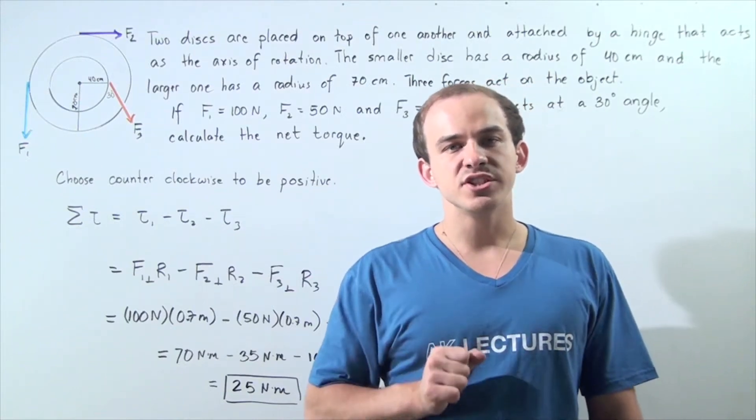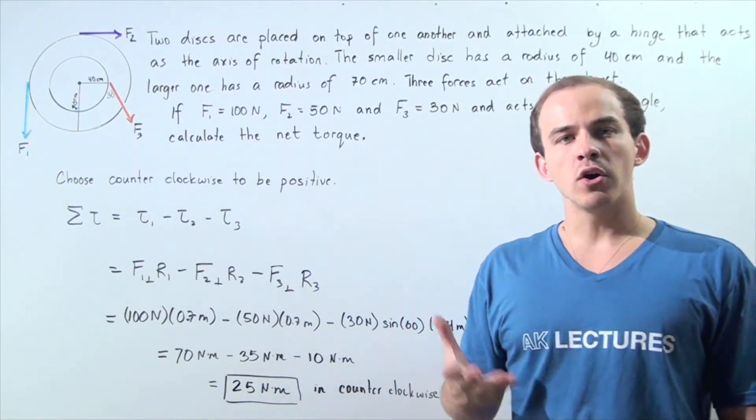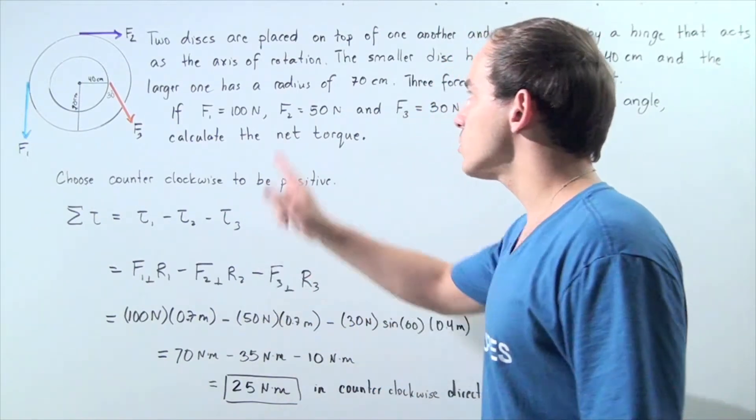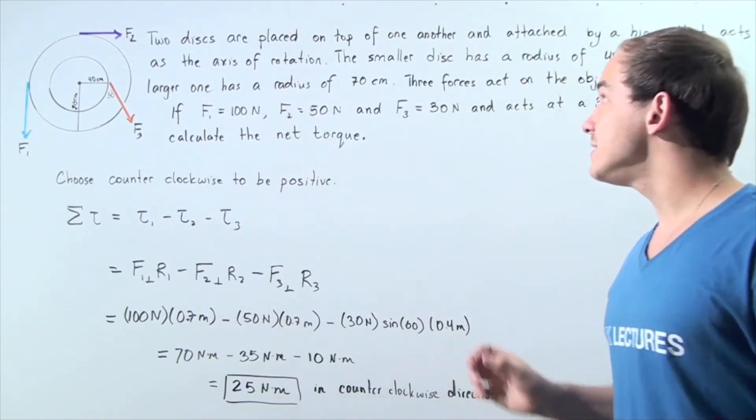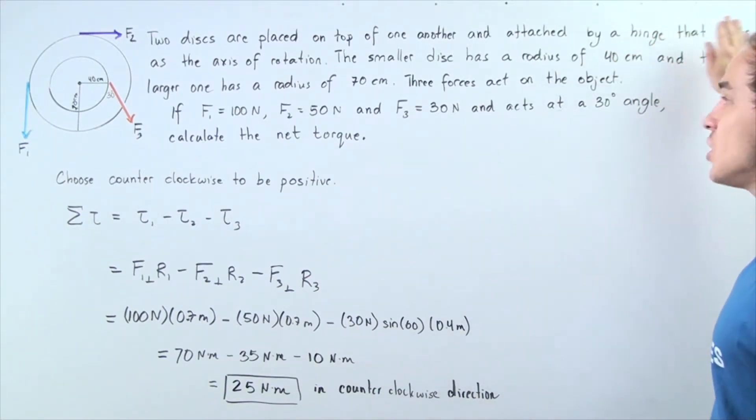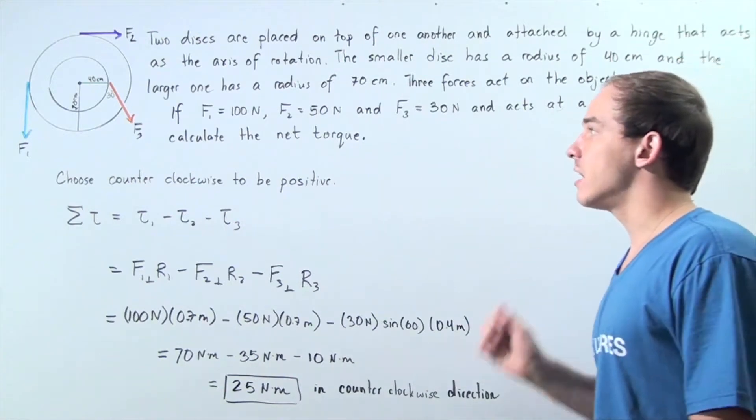In this example, we're going to calculate the net torque acting on a system of two objects. Let's suppose that two disks are placed on top of one another and attached at the center by a hinge that acts as the axis of rotation.